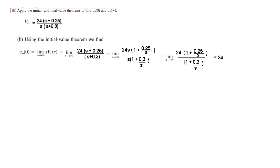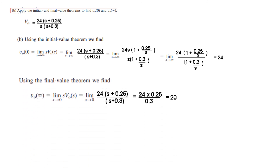For the final value theorem, v(∞) = lim[s→0] s·V_o(s). We substitute s = 0 directly: 24·(0.25) / (0.3) = 20. So v(∞) = 20 V. This completes part (b).